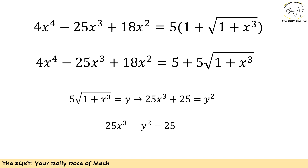To solve this problem we have a lot of things to consider. On the left hand side the degree of the polynomial is 4, and on the right hand side we don't have a polynomial — we have radical(1 + x³). I'm going to first multiply the 5 on the right hand side by both terms inside the parentheses, so at the end I have 5 plus 5·radical(1 + x cubed).